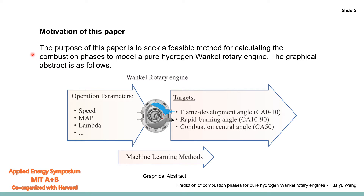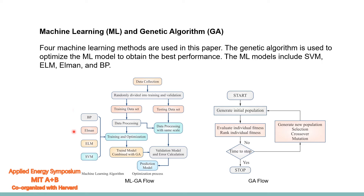This is the motivation of this paper. The purpose of this paper is to seek a feasible method for calculating the ignition phase to model a pure hydrogen rotary engine. The framework structure is as follows. We want to predict the flame development angle, the main combustion angle, and the combustion center angle using machine learning models. These are the operation parameters used in this paper.